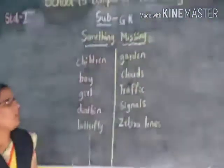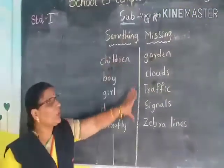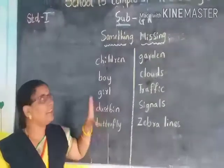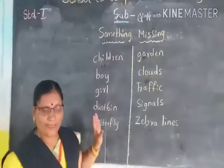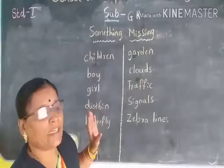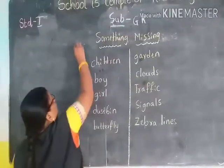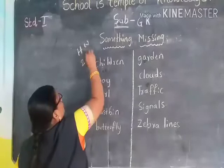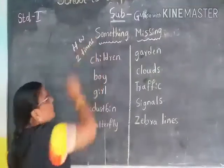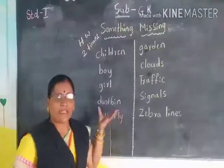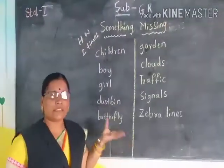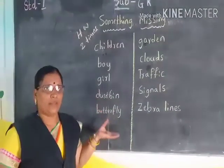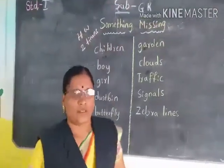See children, what you have to do? These all the words — say and write. Learn the spellings. How many times you have to write? Write two times these words and learn the spellings, and send me the video back. Thank you.